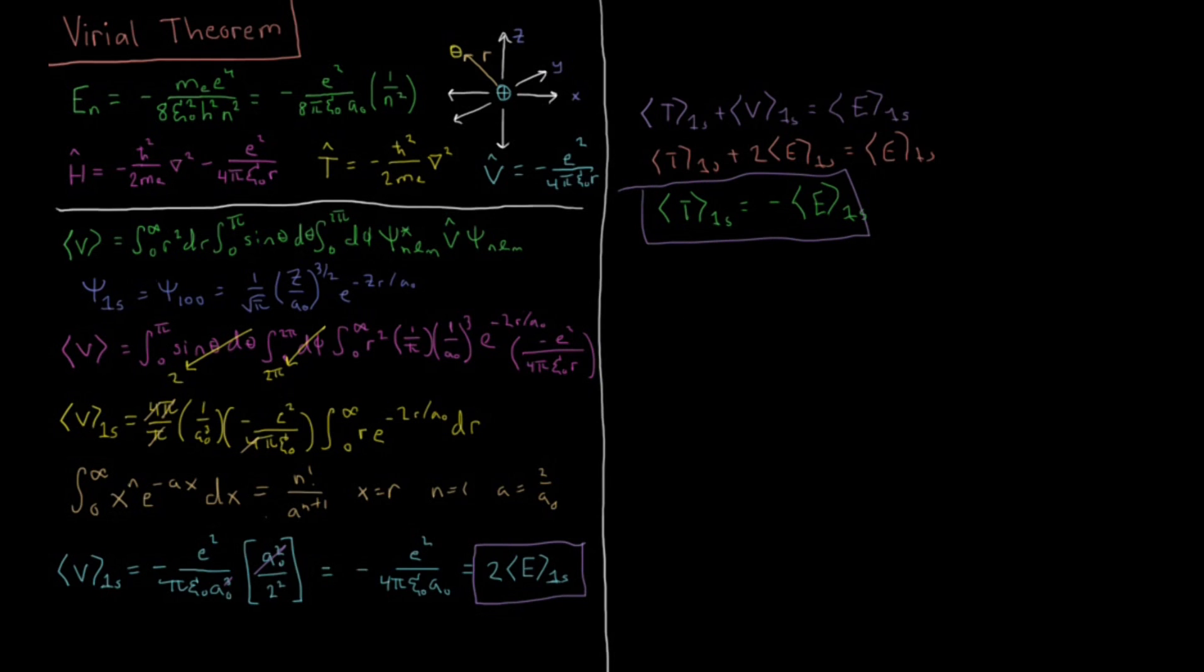So let's look at the ratio of these two now. The ratio of potential over kinetic is just 2 times the energy, the total energy, over minus 1 times the total energy. So very quickly, we see these two cancel here. And we get that the ratio of our expectation value of potential energy over expectation value of kinetic energy is minus 2. And this result is the result of the virial theorem.